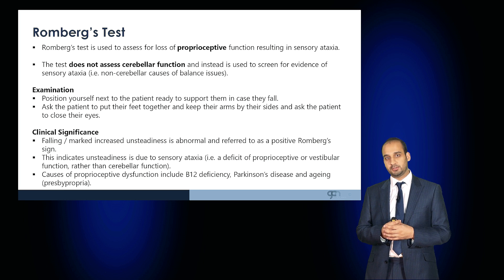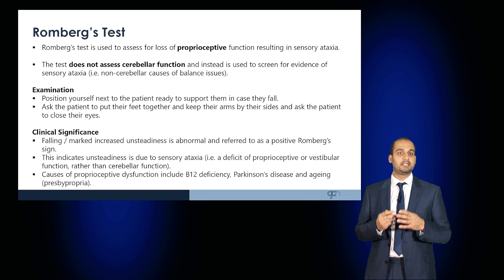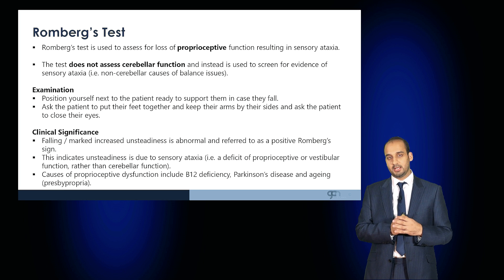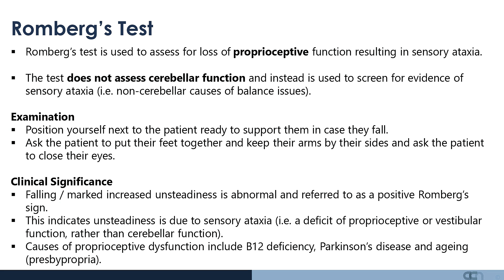Perform Romberg's test, which assesses loss of proprioceptive function in sensory ataxia — it does not assess cerebellar function but helps distinguish non-cerebellar causes of balance issues. Position yourself next to the patient ready to support them. Ask the patient to put their feet together, arms by their side, and then close their eyes. If the patient becomes markedly unsteady or falls on eye closure, this is a positive Romberg sign, suggesting unsteadiness due to sensory ataxia — a defect in proprioceptive or vestibular function. Causes include vitamin B12 deficiency, Parkinson's disease and aging.